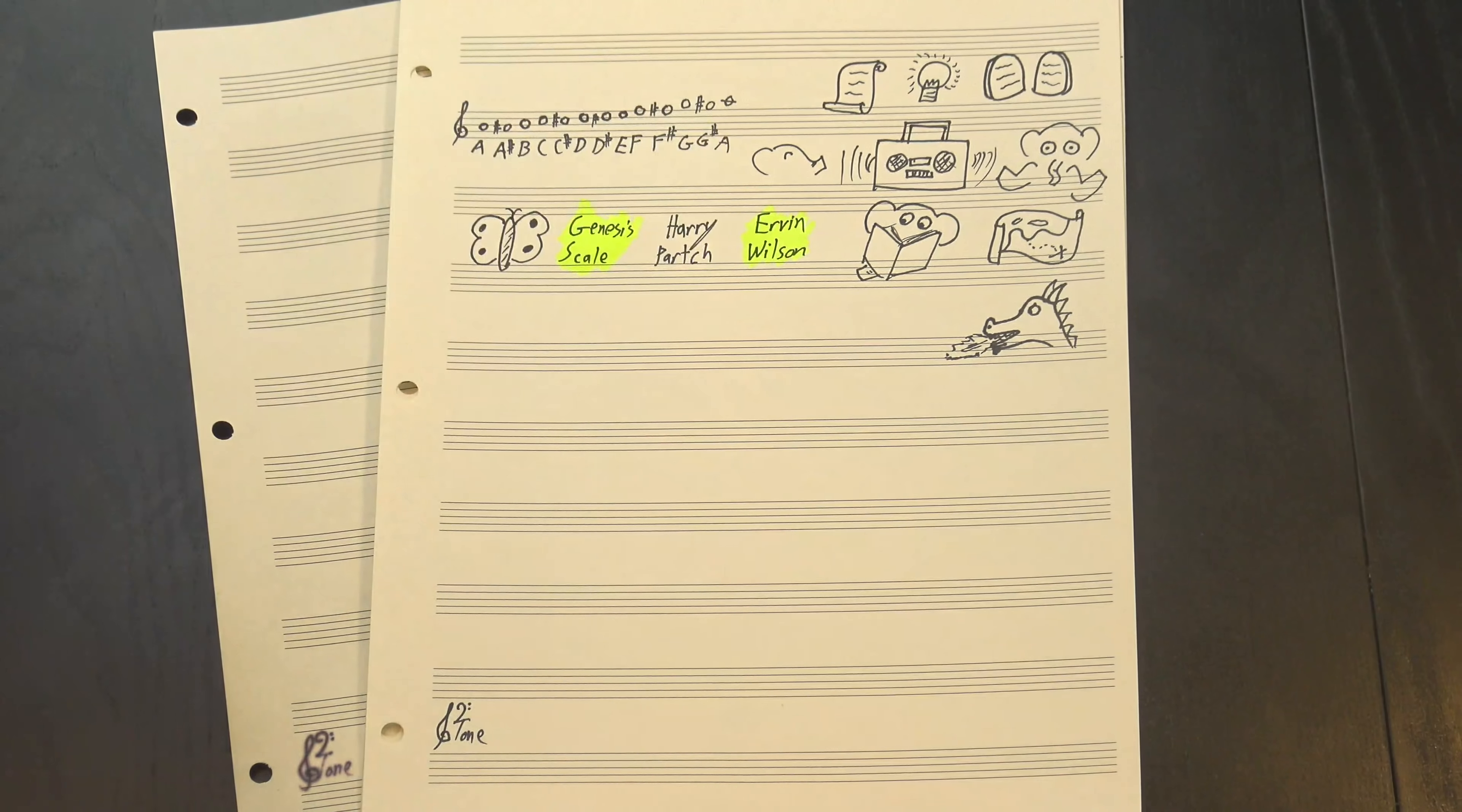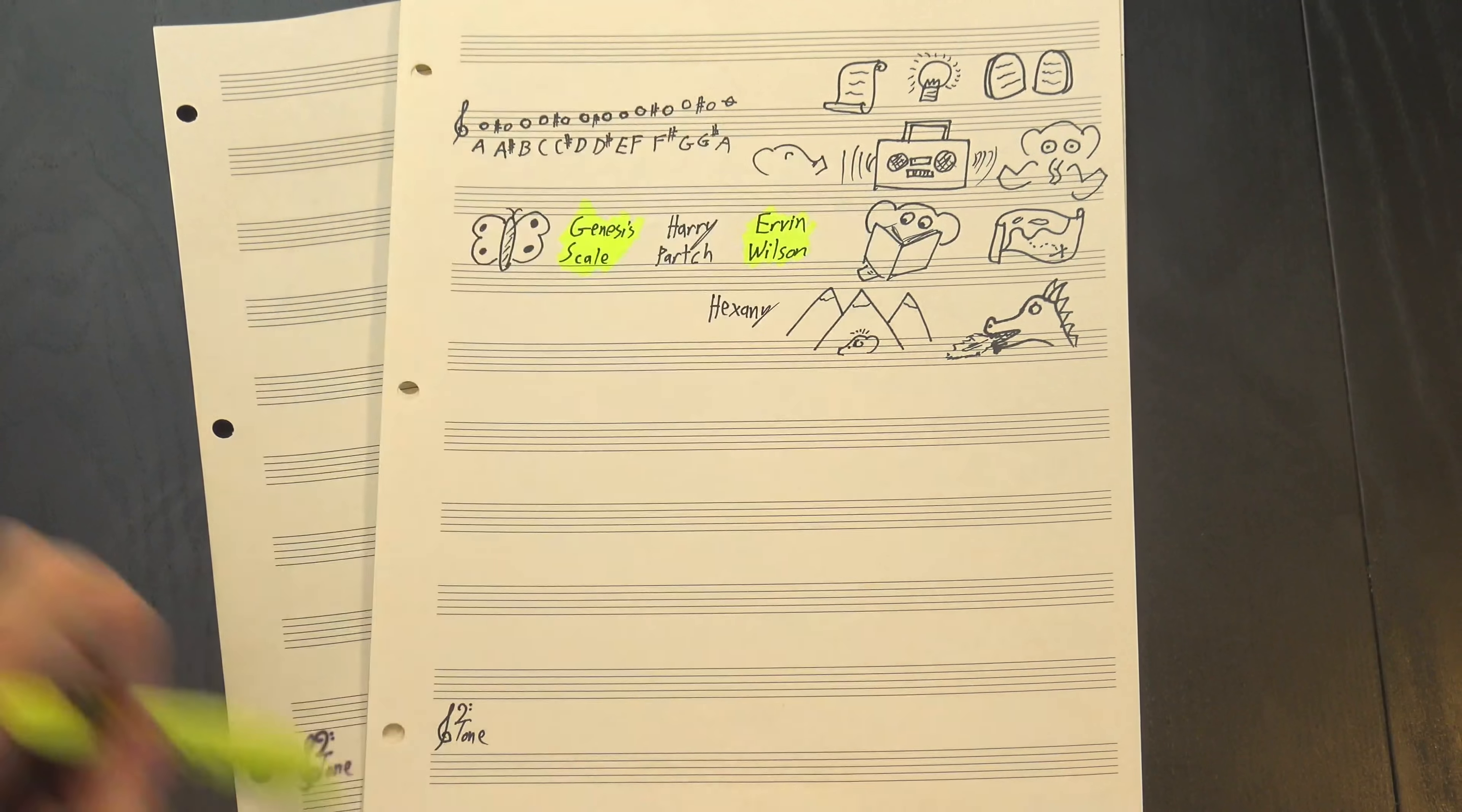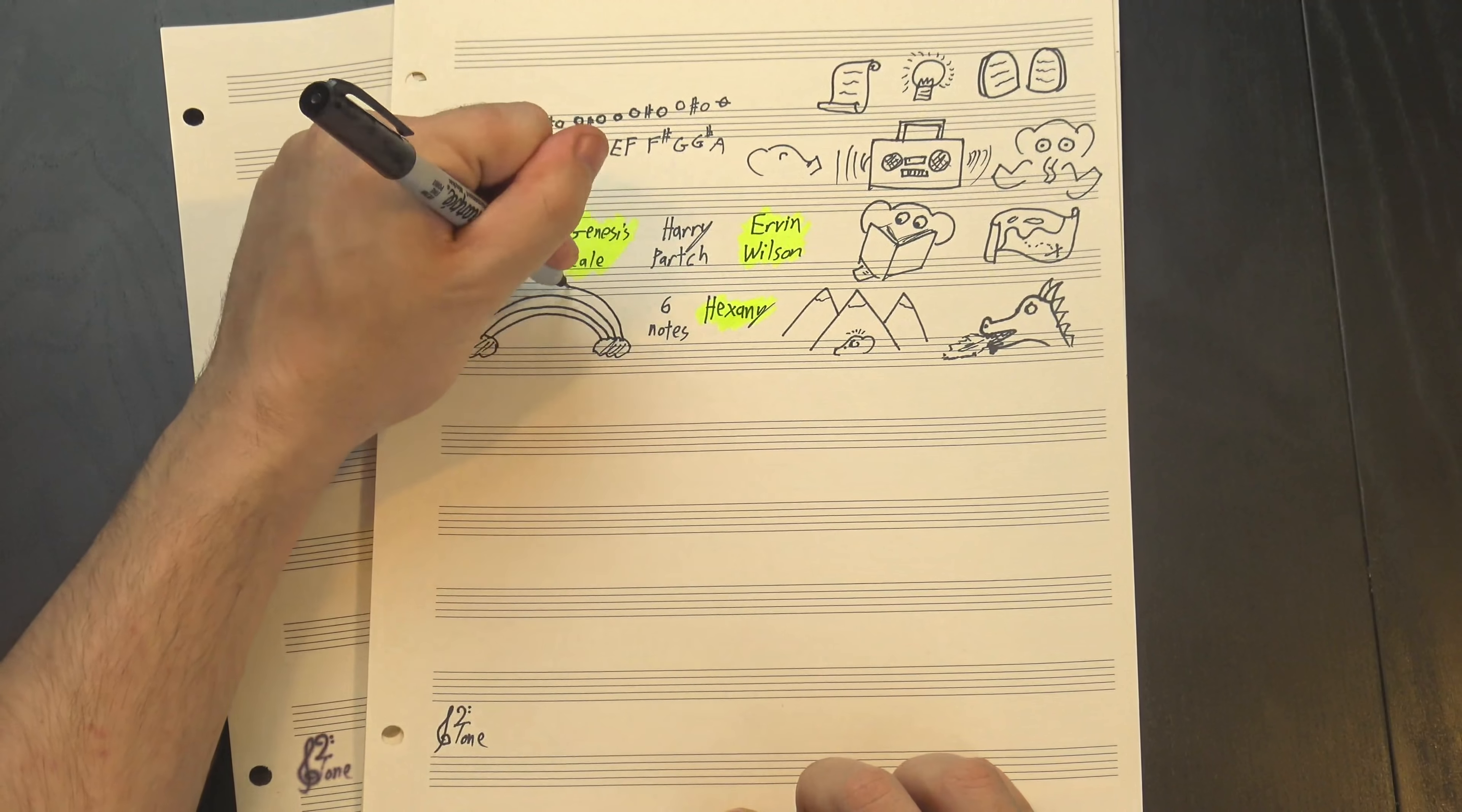Wilson had a similar philosophy, but where Parch went big, Wilson's vision was smaller—a lot smaller. His most famous work is probably the Hexany, which is made up of only six notes, but it manages to fit an absurd amount of variety and color in that fairly limited collection.